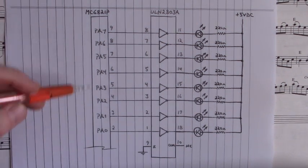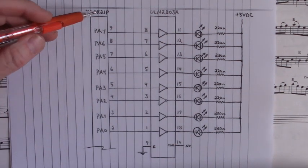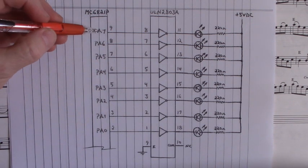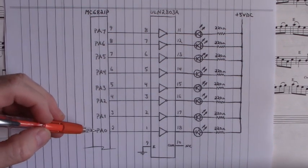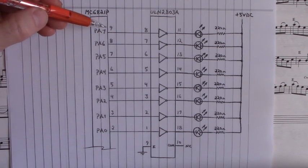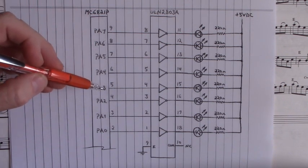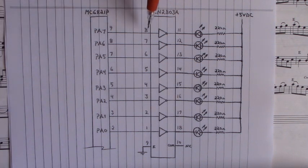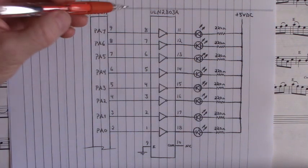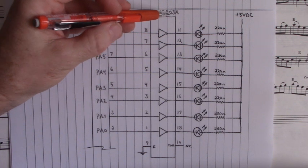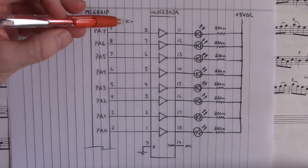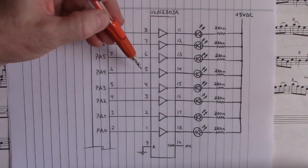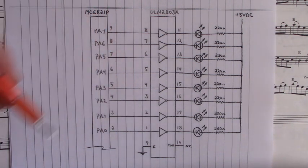Here's port A of the MC6821P. Port A7 through port A0 are on pins 9, 8, 7, 6, 5, 4, 3, and 2. And they drive into the ULN2803A input side on pins 8, 7, 6, 5, 4, 3, 2, 1. Those are the base inputs.